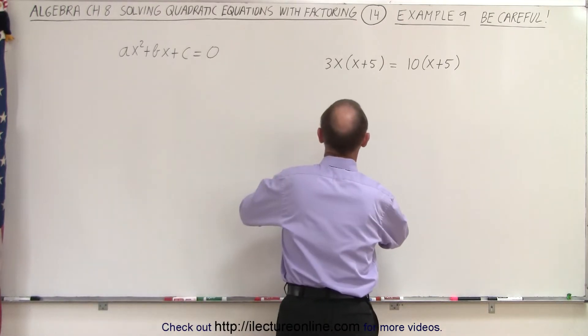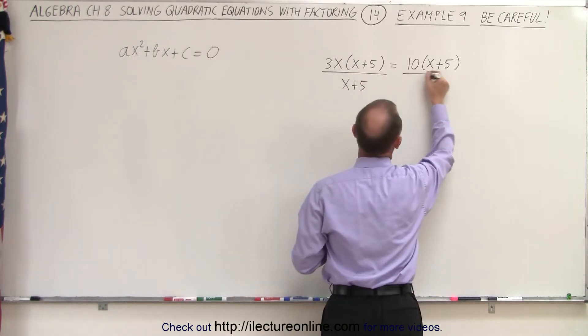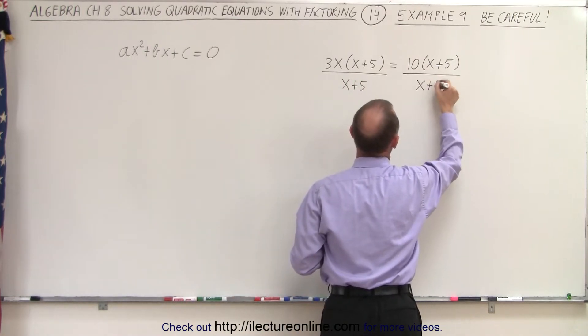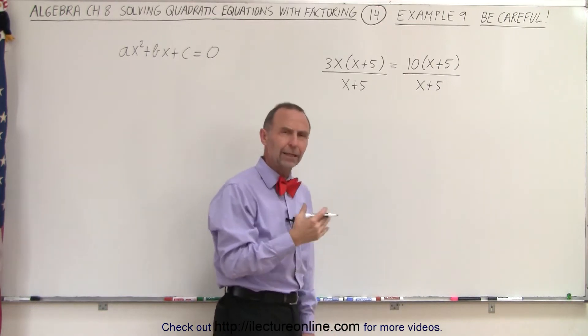So what I could do is I can do the following. I can divide the left side by x plus 5. I can divide the right side by x plus 5. So essentially I've divided both sides by the same quantity. Can I not do that?